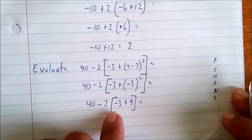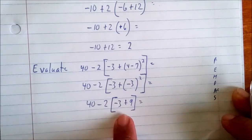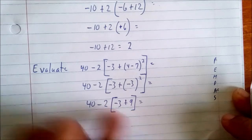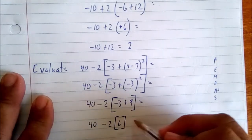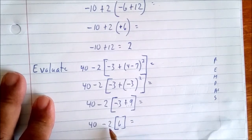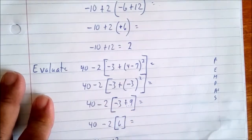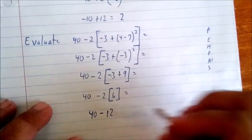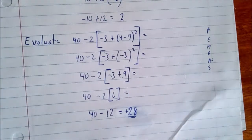Now we have negative 3 squared inside the brackets. Exponent comes next, so negative 3 times negative 3 gives us positive 9. Now inside the brackets we do negative 3 plus 9, which gives us positive 6. We bring down the negative 2 and the 40. Then negative 2 times 6 gives us 12, and 40 take away 12 gives us 28.